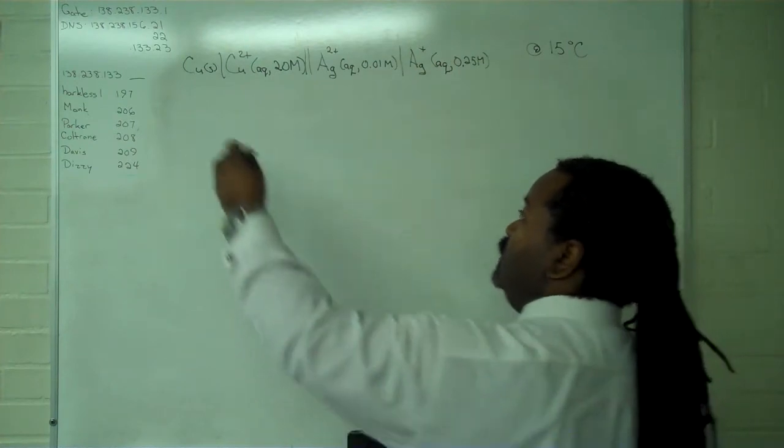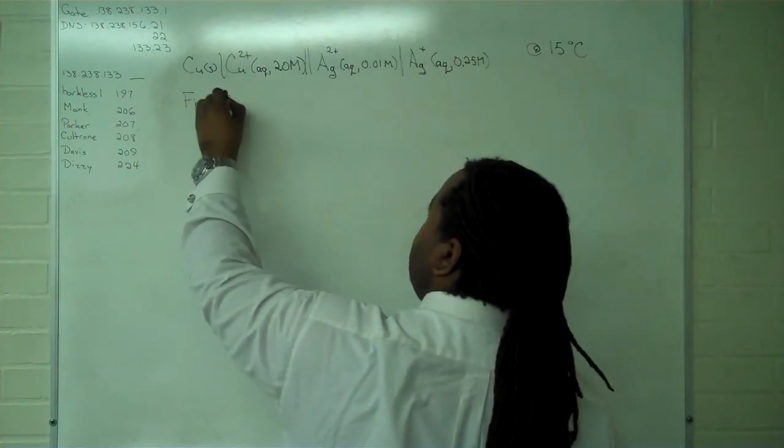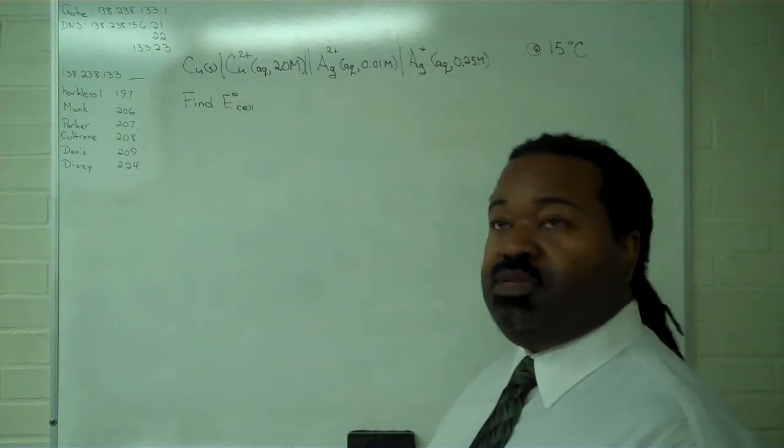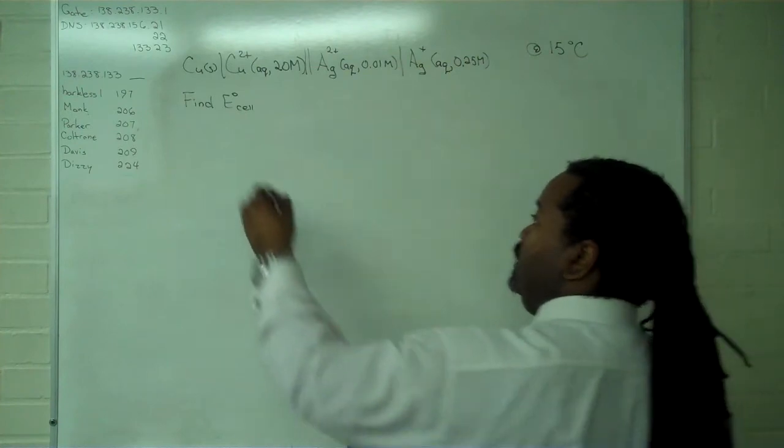In this case, the first step is that we're going to need to find E-cell standard. So for that, you have to complete the half-reactions and find them in a lookup table.